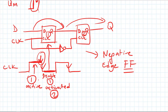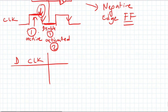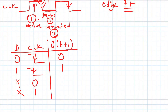This is a negative edge flip flop - the only important D value is captured at the negative edge of the clock. All other times, we don't care about D since we only sample it at the negative edge. The functionality table: if D=0 and there is a negative clock edge, output is 0; if D=1 and there is a negative clock edge, output is 1. If the clock is steady at 0 or 1, the last output value is held.